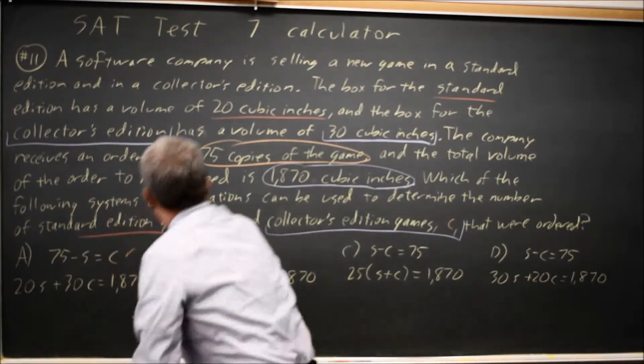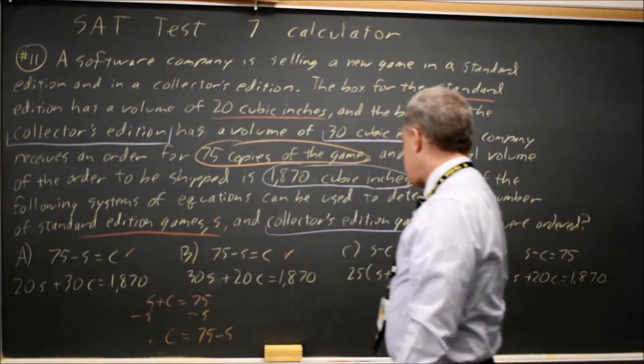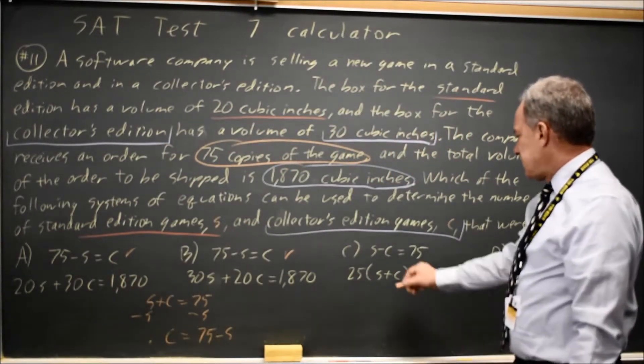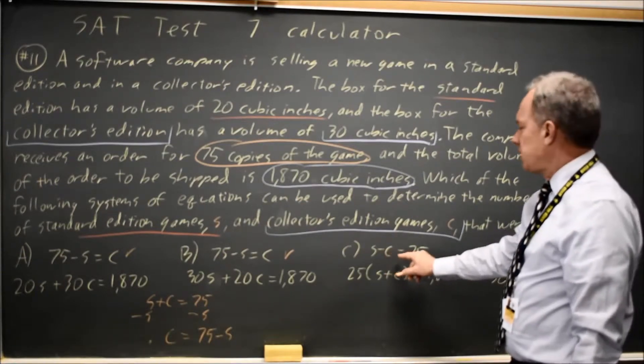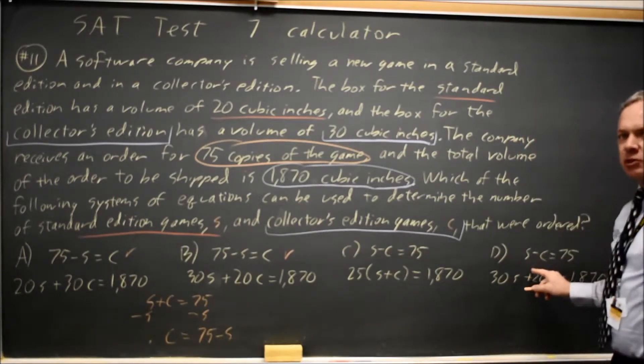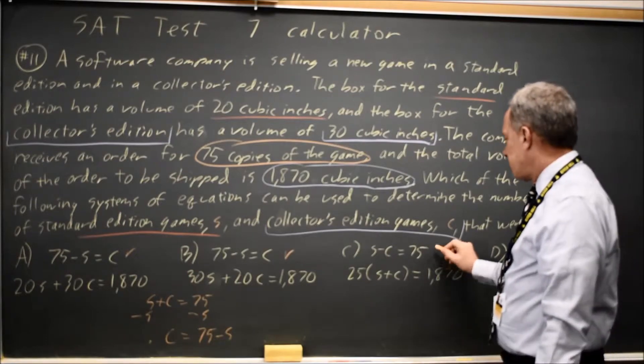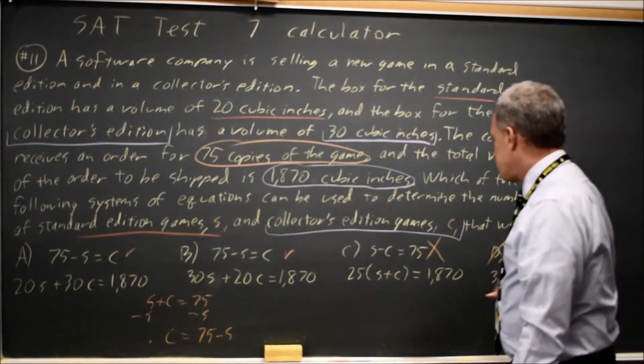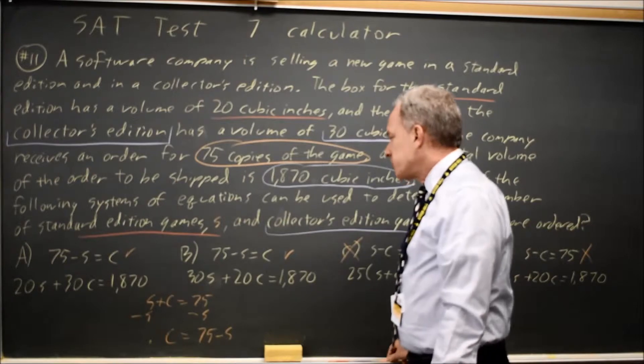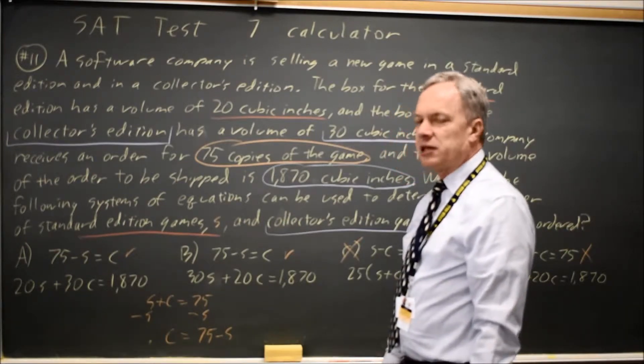which is the first equation in choice A and the first equation in choice B. C and D have S minus C equals 75, where I know it's supposed to be S plus C equals 75, so those are wrong, which means choices C and D can be rejected. Now we're choosing between A and B.